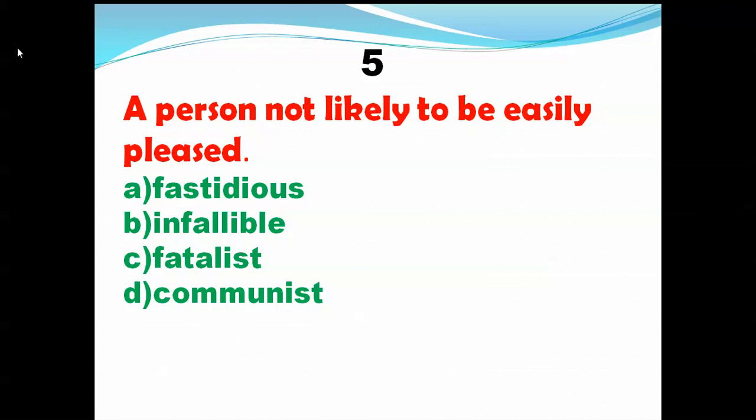Infallible means flawless, faultless, error-free — incapable of making any mistake. Someone who is infallible is so accurate they don't make any mistake; you can call them a perfectionist. Fatalist means someone who feels that no matter what he or she does, the outcome will be the same — the effort put in will not affect the ultimate result. He thinks whether he tries or not, the result is already predetermined.